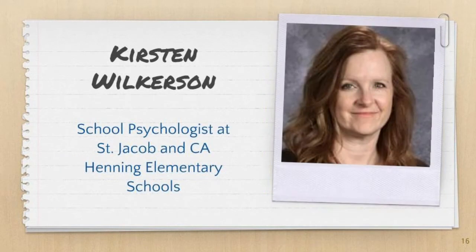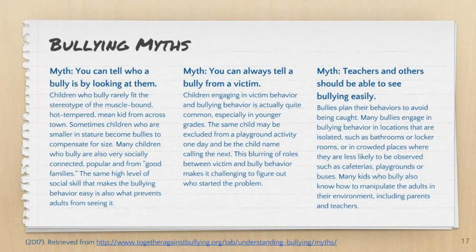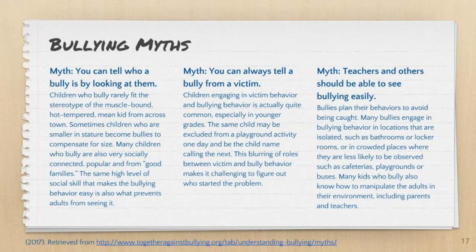My name is Kirsten Wilkerson and I am a school psychologist at St. Jacob Elementary School and Henning Elementary School, and we are going to talk about some of the myths surrounding bullying. One of the most common myths is that you are able to tell who a bully is just by looking at them, which is rarely the case. Children who bully typically do not fit the stereotype seen in movies or TV shows. Sometimes children who are smaller in stature become bullies to compensate for their size. Many children identified as bullies may be socially connected, popular kids from what you would consider a good family, and their higher-level social skills make their bullying behavior easier to get away with.